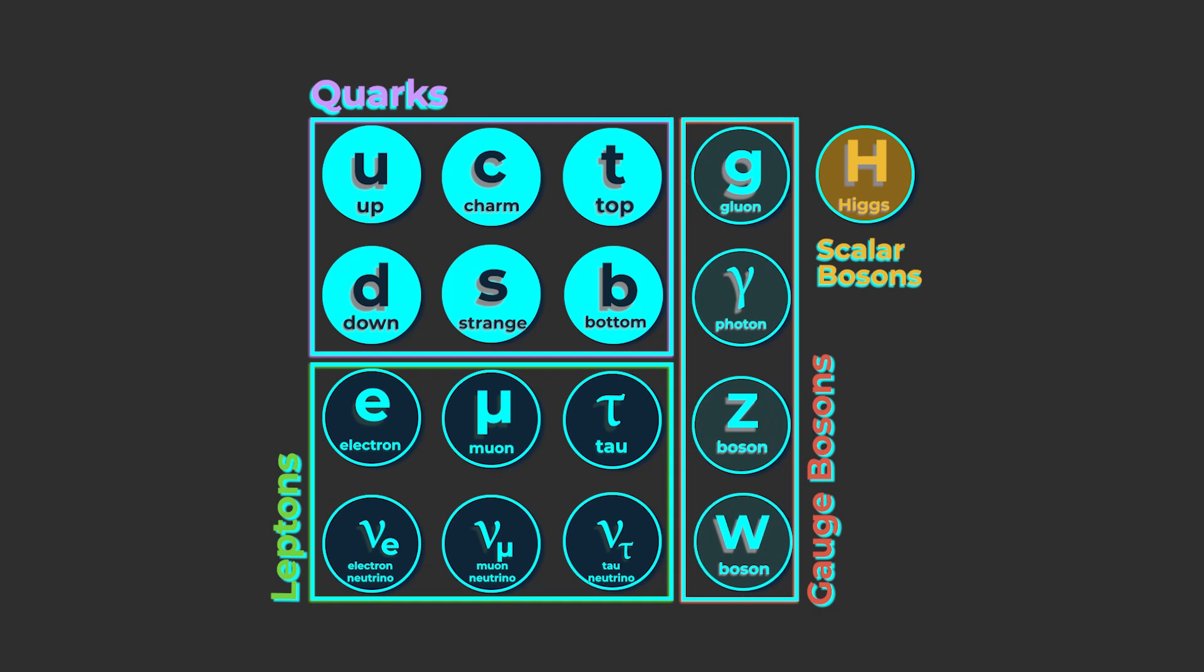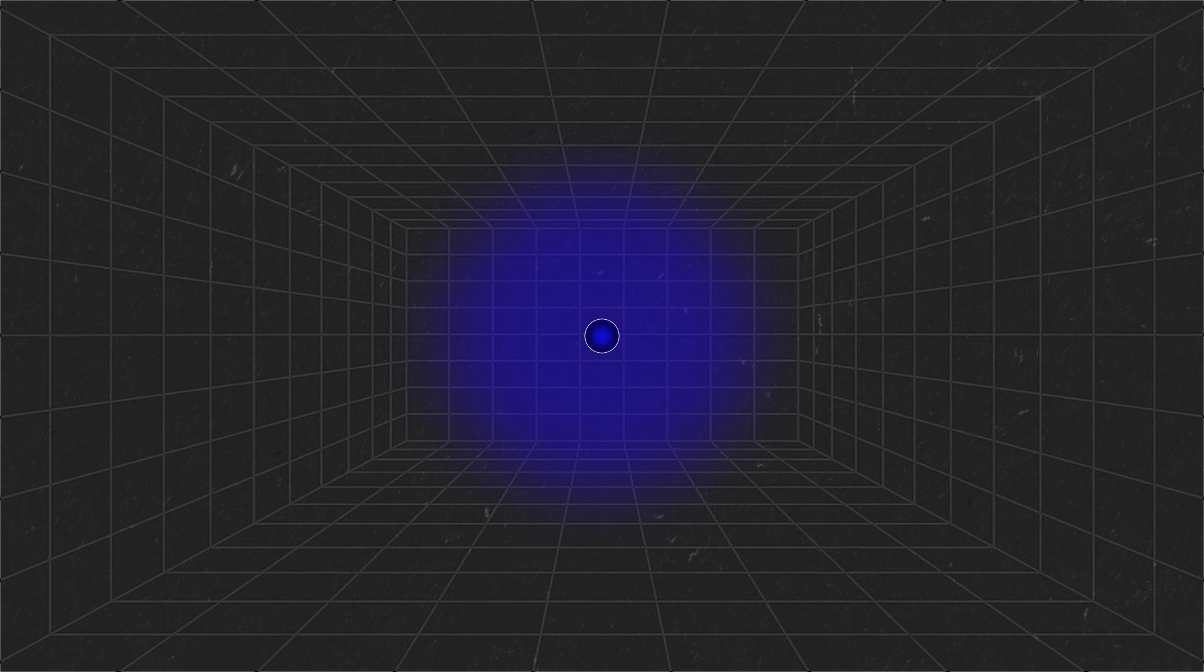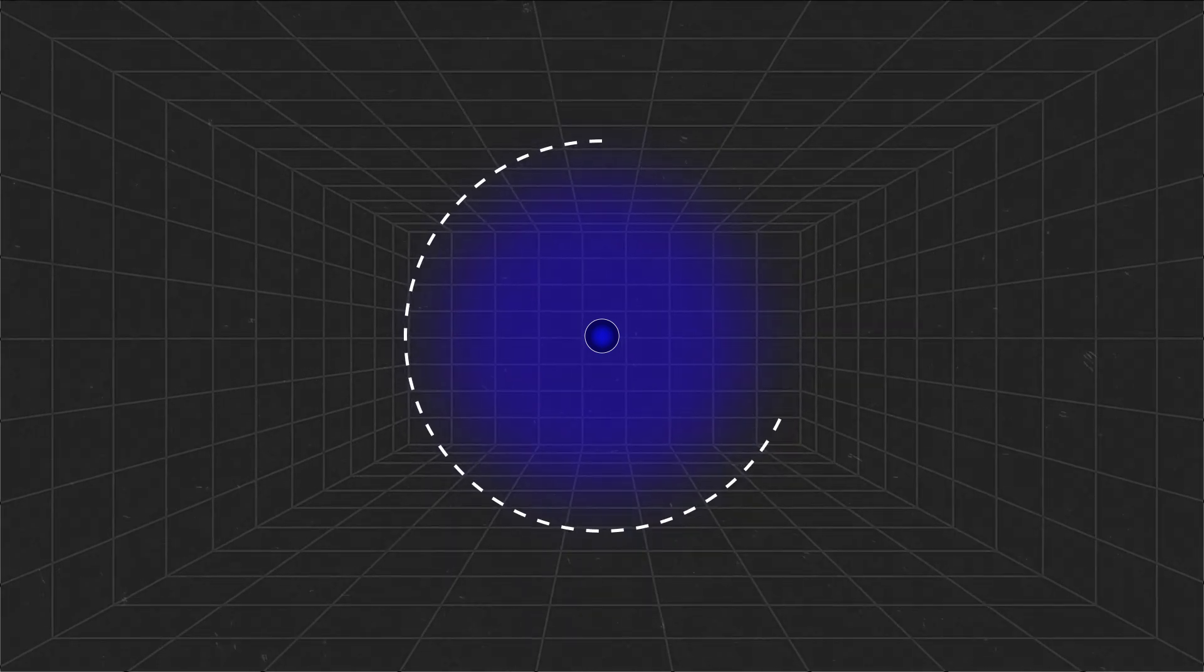One theory is that this symmetry is broken by a small asymmetry hiding for us at the electron level. In the standard model of particle physics, which describes the behavior of fundamental particles and their interactions, it predicts that the electron should be perfectly round.